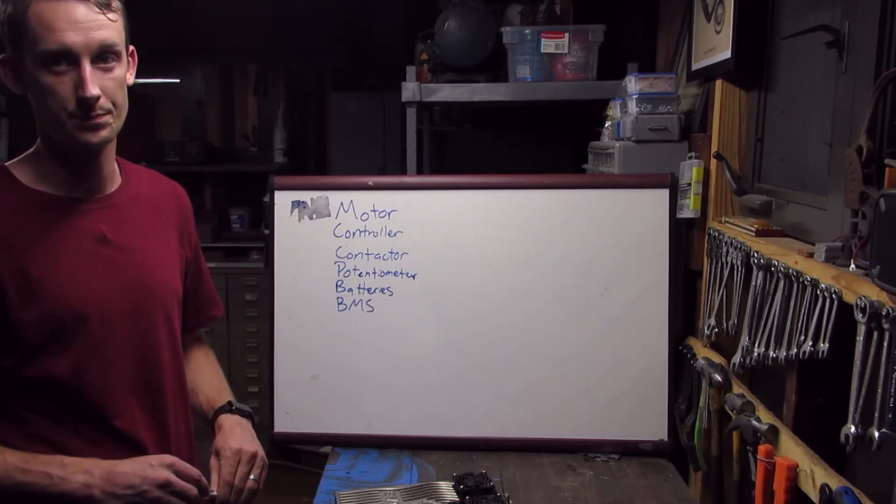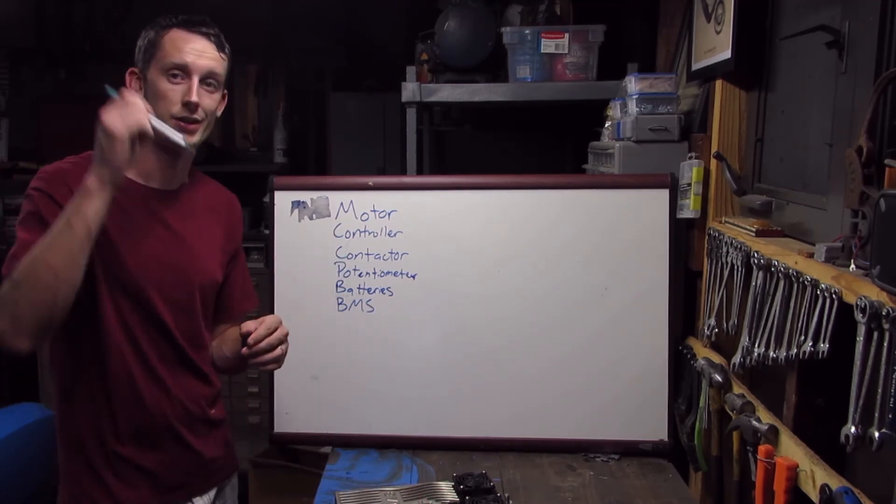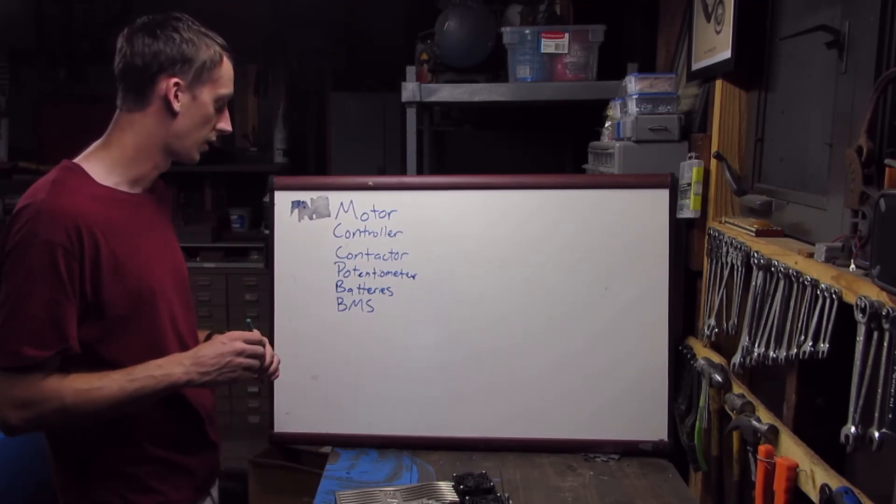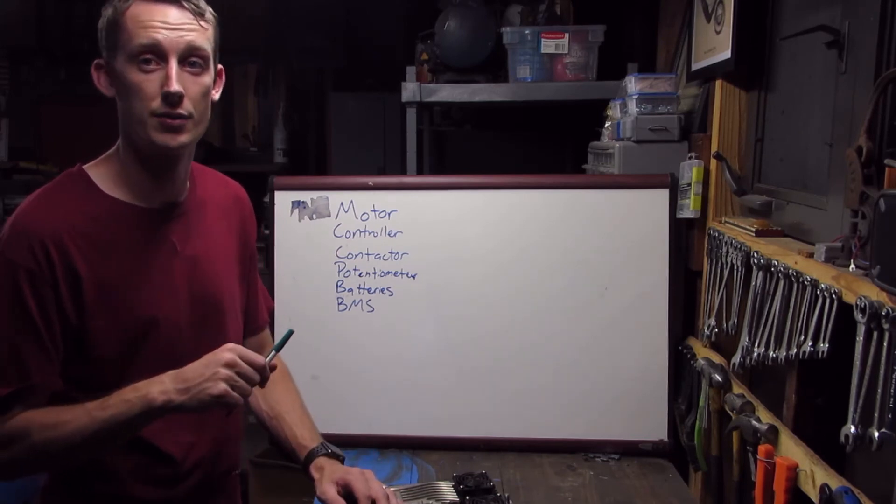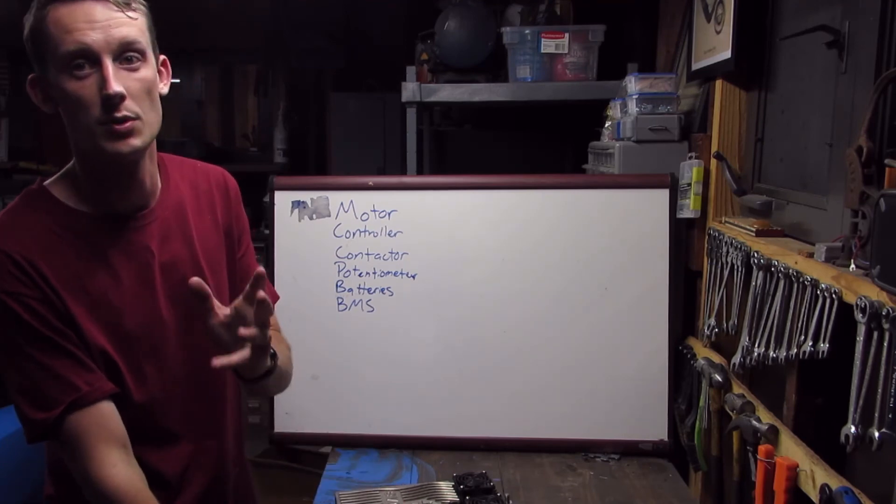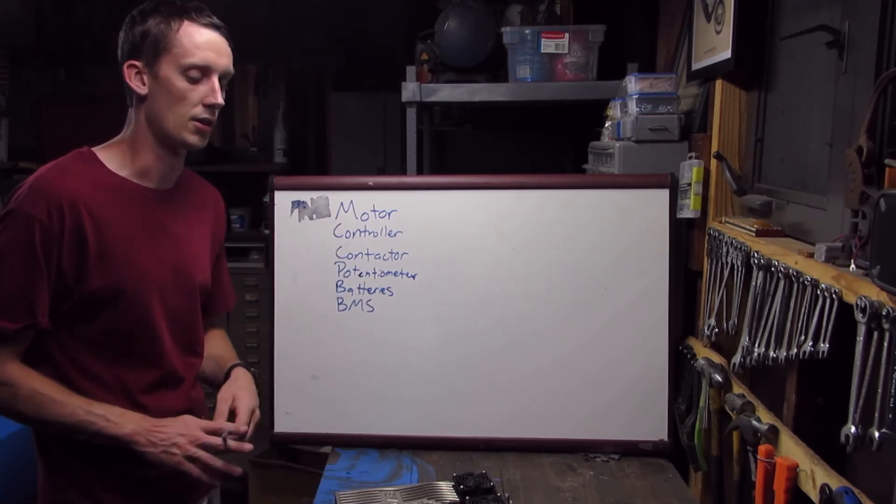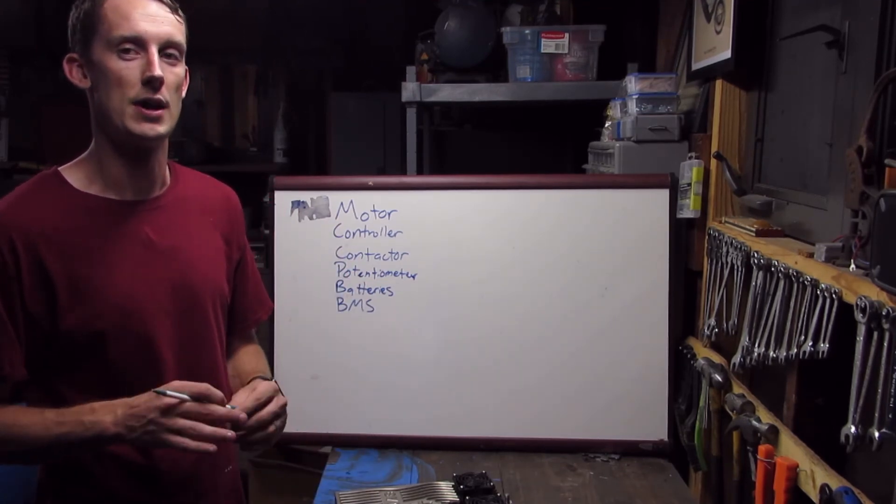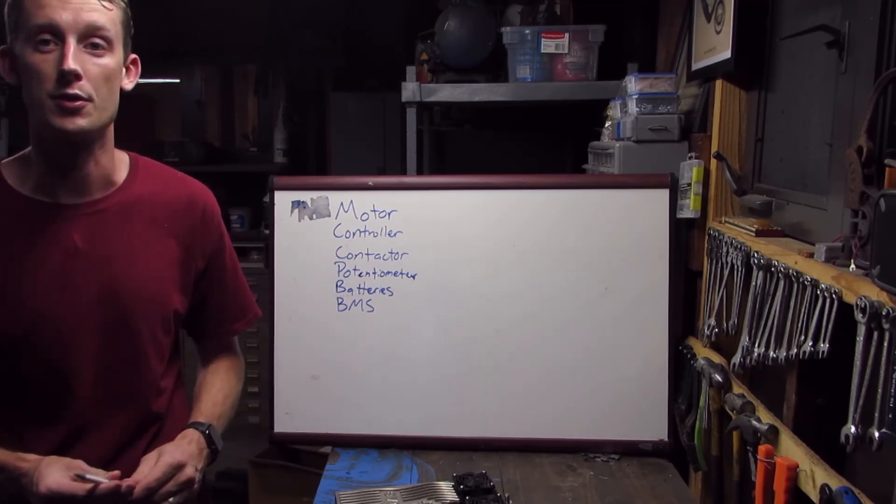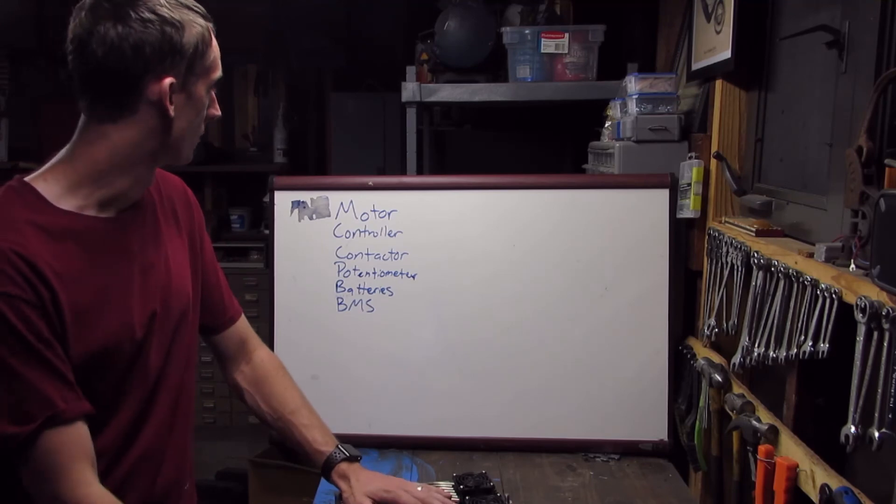Just to recap real quick, you just need your motor, controller, contactor, potentiometer, batteries, and battery management system. We have our motor you saw that in the last video. I showed you our controller. Our contactor, I'll put a link in the description for the contactor I'm probably going to be using. The potentiometer I got that from EV West. It is under the car already. The batteries I'm still doing a lot of research on. The BMS is the Zeva system, the Australian based company that I want to try and use for this system.